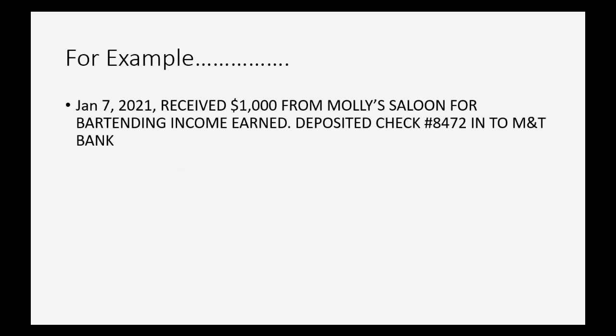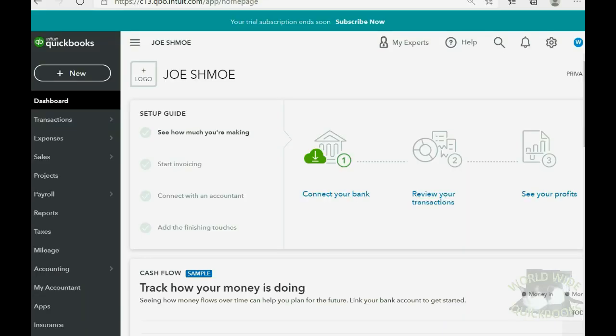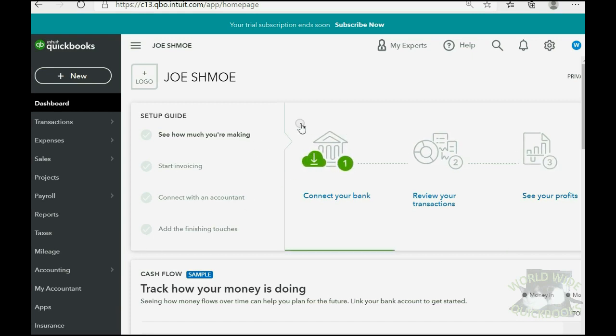For example, let's imagine on January 7th of 2021 we received a thousand dollars from Molly Saloon for bartending income earned, and we deposited check number 84772 into MT Bank. Right now the trial balance is blank, but after recording this first deposit of a thousand dollars into MT Bank, MT Bank will show up in the trial balance for the first time as a thousand dollars. And because this was earned bartending income, bartending income earned will also show up in the trial balance as a thousand dollars.